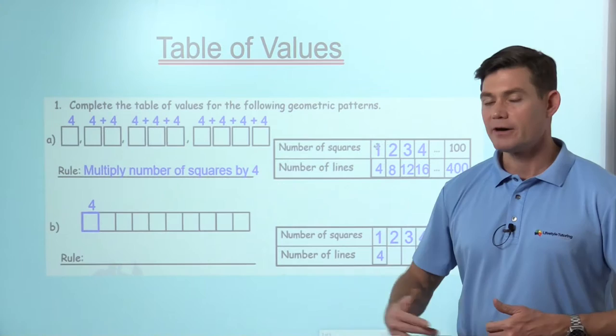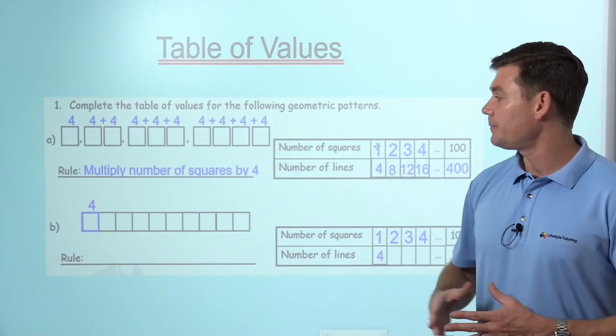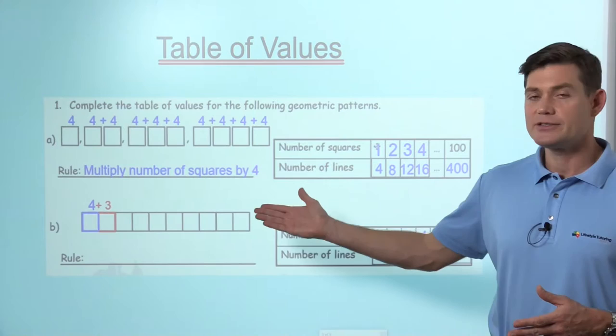Then it says, how many lines are in each? So with the first one, I've highlighted there, there's still going to be four lines. Well, that makes sense. It's going to be just like it is up the top here.